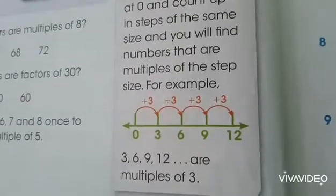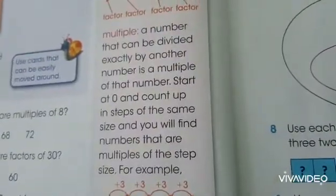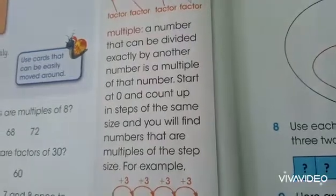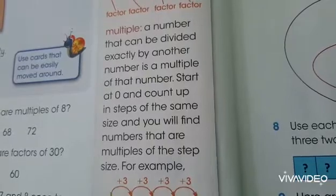Jadi, angka-angka yang kelipatan dari 3. Multiple itu kelipatan. Start at 0 and count up in steps of the same size, and you will find numbers that are multiples of the same size.